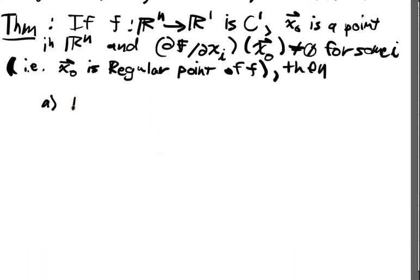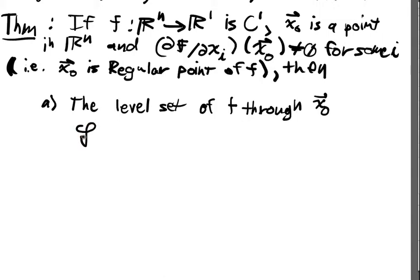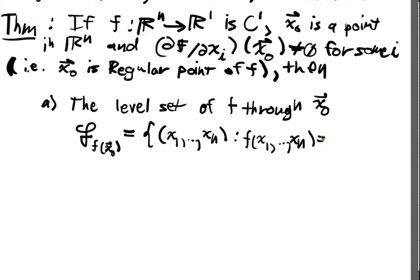a) the level set of f through x₀, and we're going to note that by script F of f(x₀), that'll be equal to the set of points (x₁, ..., xₙ) such that f(x₁, ..., xₙ) is equal to f(x₀).